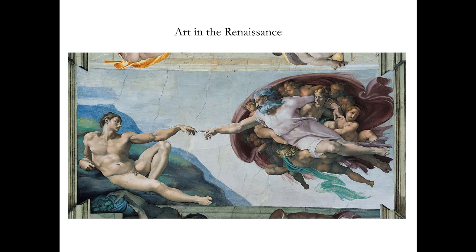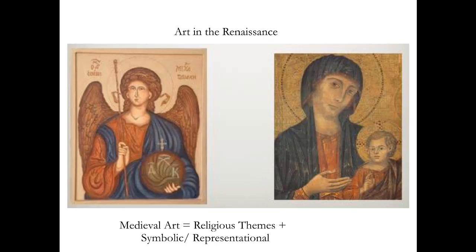It's going to be a brief overview, but mostly we're talking about changes. And so if we're going to talk about changes, we have to talk about how art was in the Middle Ages, before the Renaissance, before the changes. And what we have is art in the Middle Ages — medieval art was religious, primarily religious, but also symbolic and representational.